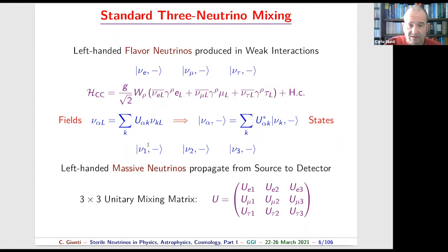The three flavor neutrinos interact through charged-current weak interaction — this is the Hamiltonian of the weak interaction. Each flavor neutrino is associated with the corresponding charged lepton. When a flavor neutrino interacts, it generates the corresponding charged lepton, so we can distinguish neutrino flavors just by distinguishing which charged lepton is produced.